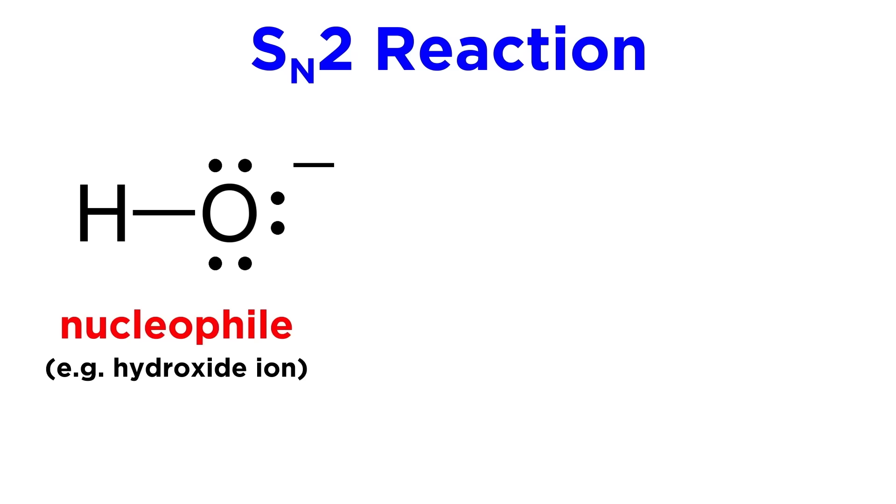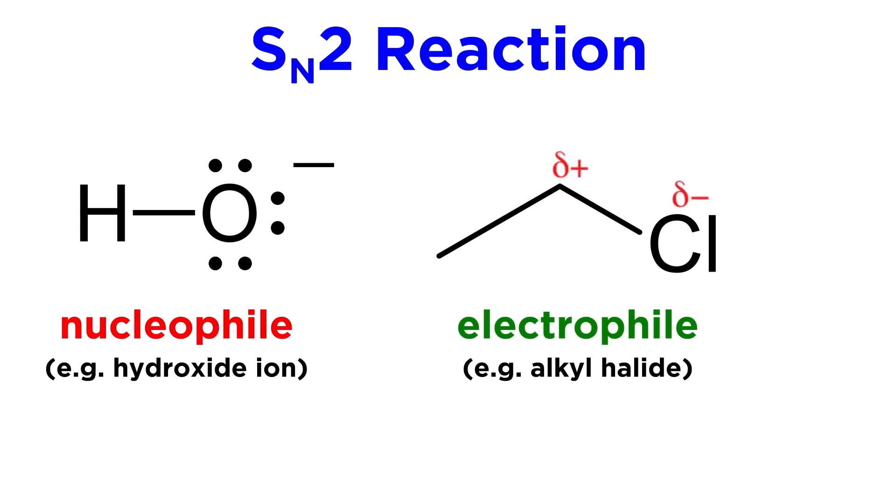In the context of the SN2 reaction, there is a nucleophile that is the electron excess, perhaps something like a hydroxide ion or a halide ion, and the electrophile is the electron deficiency, which is something like an alkyl halide with this partial positive charge on the carbon adjacent to the halogen, due to the polarity of this bond.